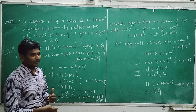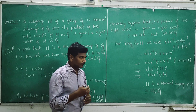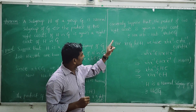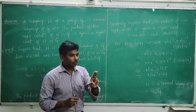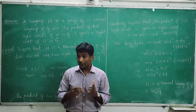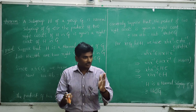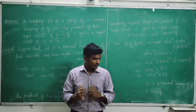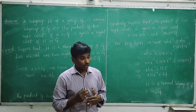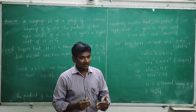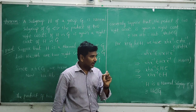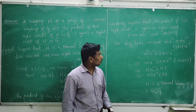Now we prove the reverse condition. Conversely, suppose that the product of two right cosets is again a right coset of H in G. We have to show that capital H is a normal subgroup of capital G.